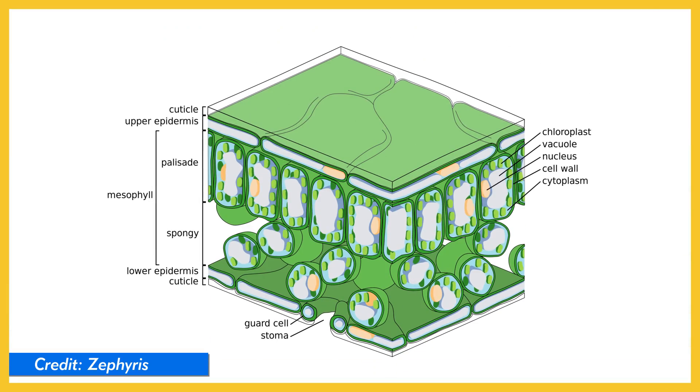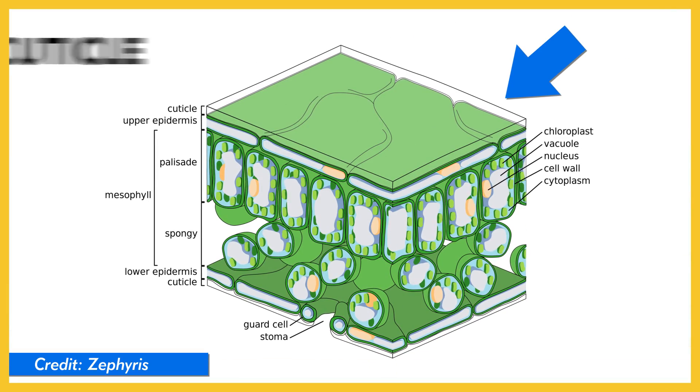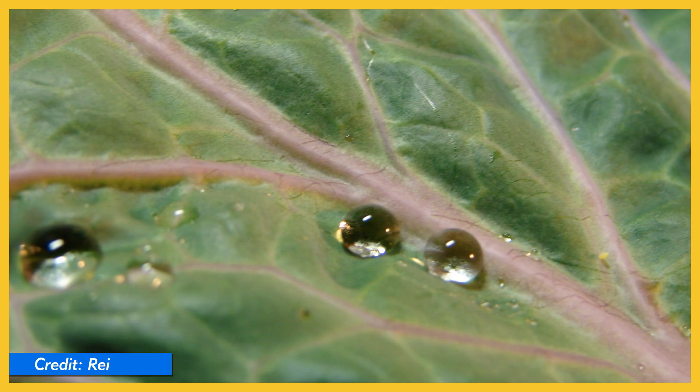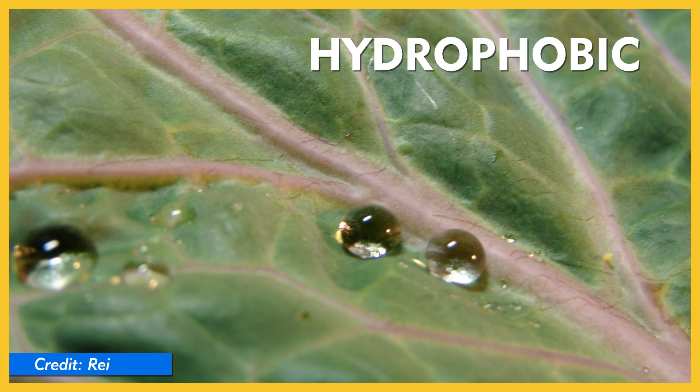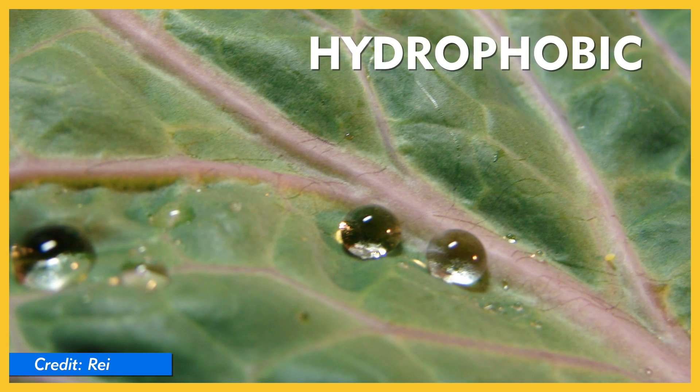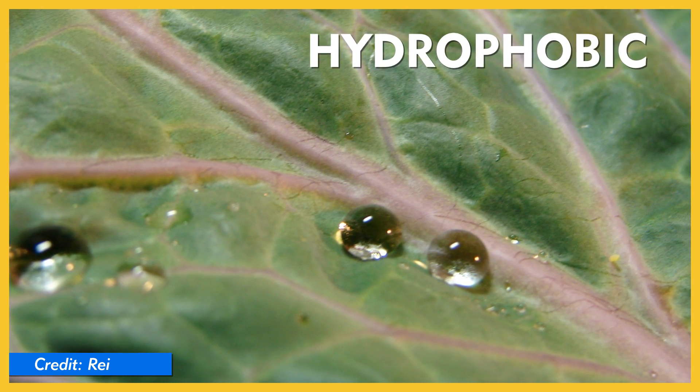The move onto land meant that plants were permanently exposed to the air, and drying out was a major concern. And it's not like plants could just grab some lotion — except they kinda did. Many plants evolved a covering called the cuticle, which contains wax. That wax compound is hydrophobic, meaning it doesn't dissolve in water, so the water is kept inside. Brilliant, right?